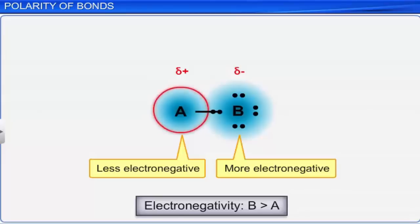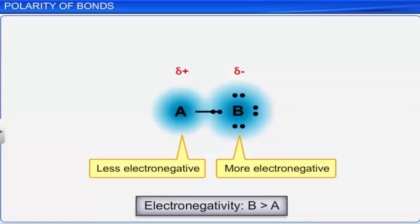The partial positive and negative charges on the dipole are indicated by the symbols delta plus and delta minus, respectively. Therefore, in heteroatomic molecules in which the two atoms differ considerably in electronegativity, two electric poles develop. We say that the molecule has developed polarity.